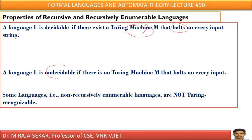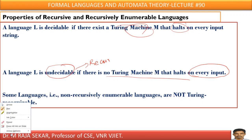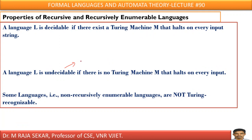A language L is undecidable if there is no Turing machine that halts on every input. This is the case with recursively enumerable language. In the case of recursively enumerable language, there is a possibility of entering into an infinite loop. If it enters into an infinite loop, then I can say that is an undecidable problem. Some languages — non-recursively enumerable languages — are not Turing recognizable, because of this infinite loop possibility, making them undecidable.